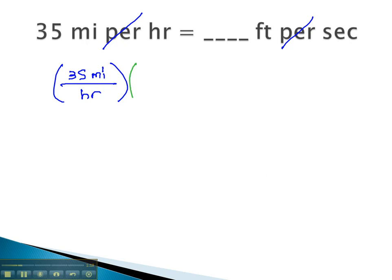And we want to convert to feet per second or feet over seconds. This means converting one at a time, converting the numerator, miles, into the new numerator, feet. We get rid of them by putting them in the denominator. And miles are going to change to feet.